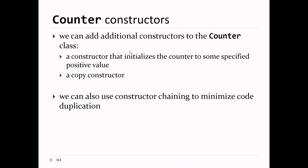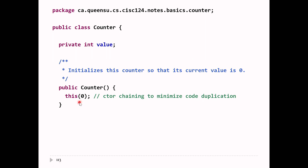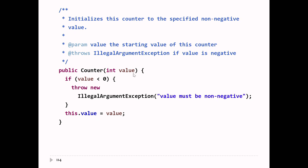You can do the same thing in the counter class. Instead of starting at zero, you might want to start at some other positive value, or you might want to copy another counter. You can use constructor chaining to remove code duplication, though in this case it's really not going to help since each constructor only has one line.